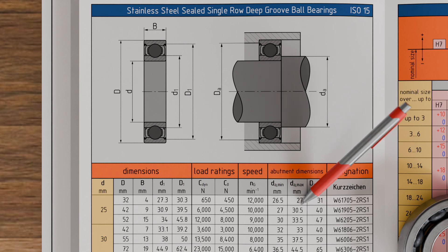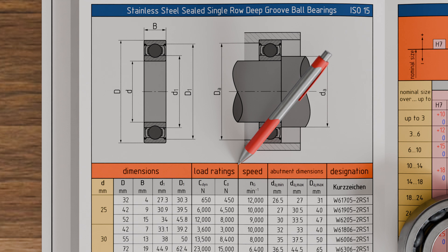Additionally, the bore diameter of the bearing housing must not exceed a maximum value of 40 mm. Other values, such as the dynamic load ratings and limiting speeds, can also be found in the catalogs of the bearing manufacturers.